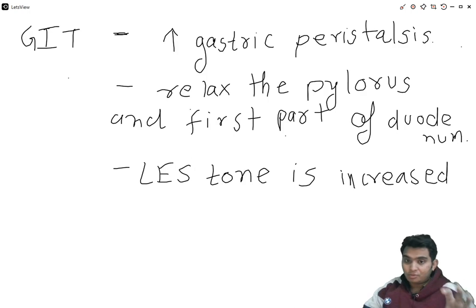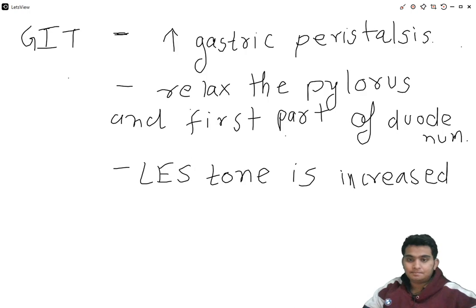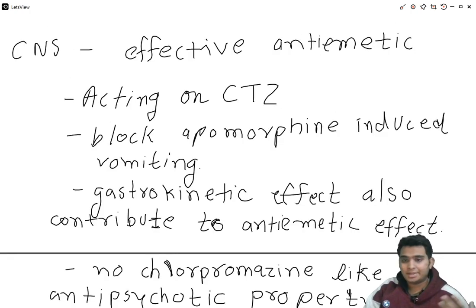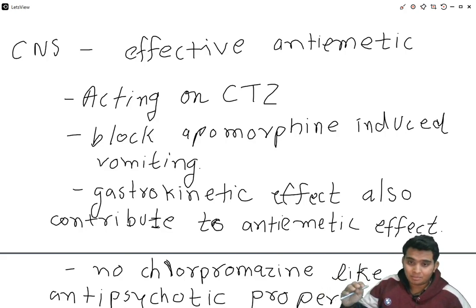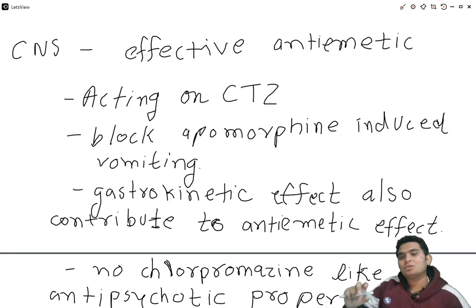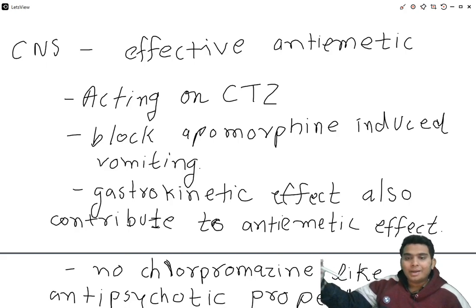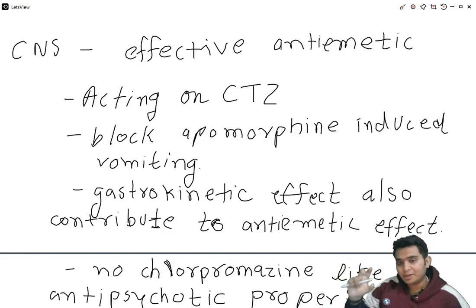By acting on these areas, metoclopramide works as a prokinetic agent. Regarding CNS effects, metoclopramide acts as an effective anti-emetic by acting on the CTZ area and blocking apomorphine-induced vomiting. It also has a gastrokinetic effect which contributes to its anti-emetic effect.